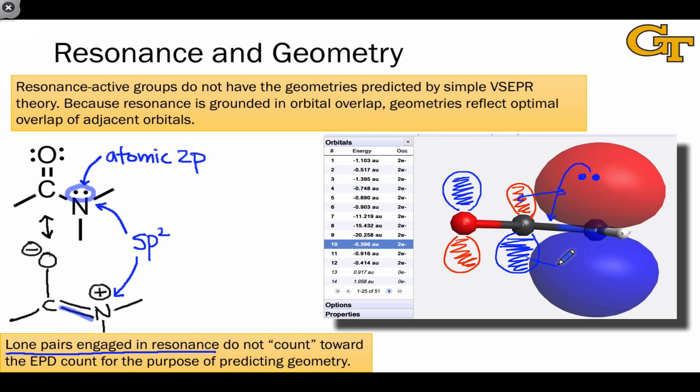So in determining hybridization and geometry, we don't consider lone pairs engaged in resonance. Another way to think about this when evaluating geometry and hybridization is to look at the resonance structure in which any resonance active lone pairs are engaged in pi bonds. The hybridization you would predict from that resonance structure alone is the hybridization of the atom in reality.